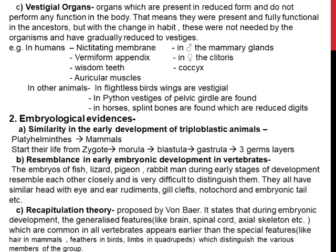Under this morphological and anatomical evidences we will now talk about vestigial organs. The vestigial organs are the organs which are present in reduced form. They are present in our body in reduced form and do not perform any function in our body — that is why they are called vestigials. These vestigial organs were fully functional in our ancestors, but as the habitat or habits changed, these organs were not needed anymore and have gradually reduced to vestigial.